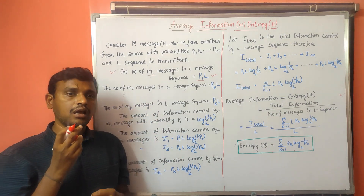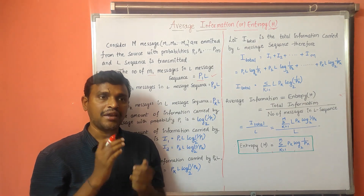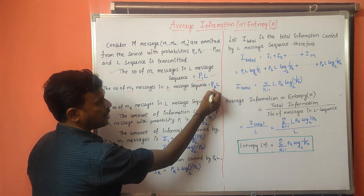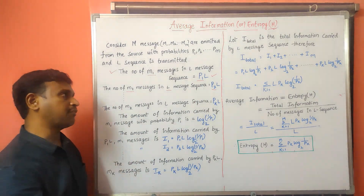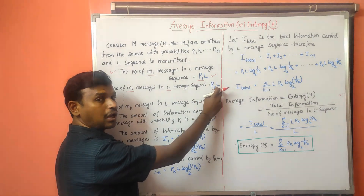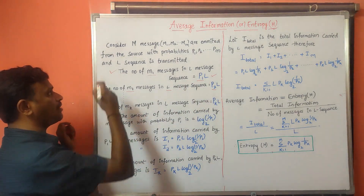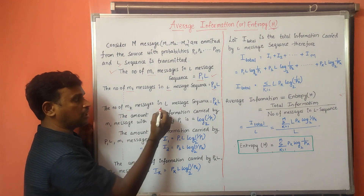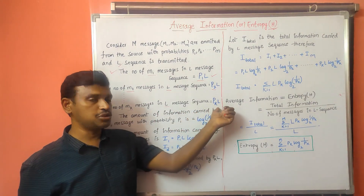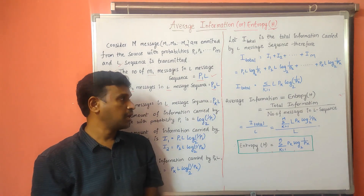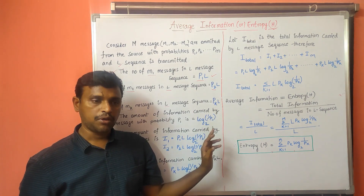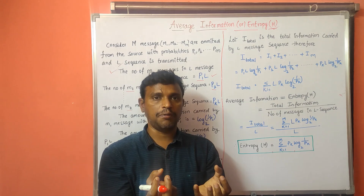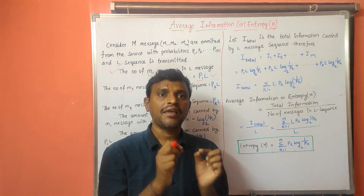The number of m2 messages in the L message sequence is the probability of occurrence of m2 multiplied with L, that is p2 into L. Similarly, the number of mk messages present in the L message sequence with probability of occurrence pk is pk multiplied with L. So we have calculated how many m1, m2, and mk messages are present in the L message sequence.